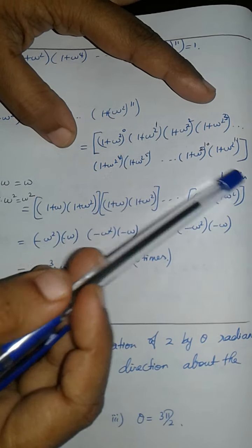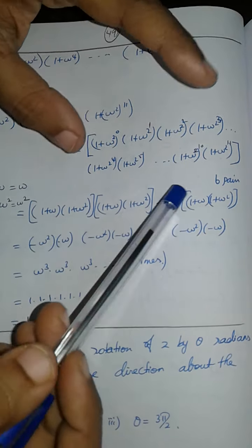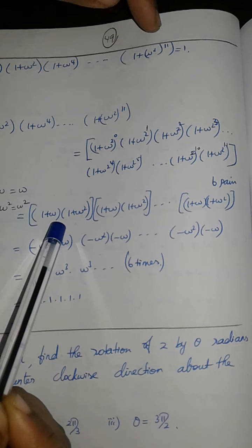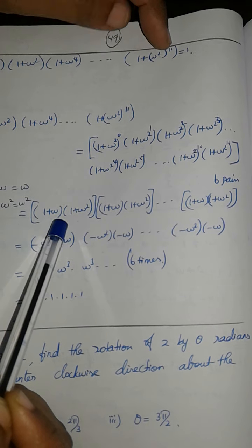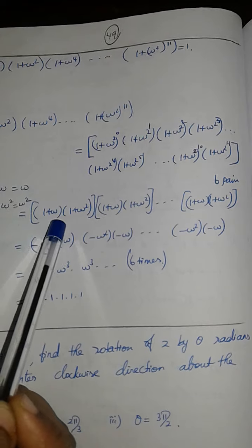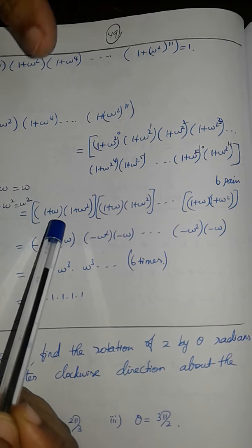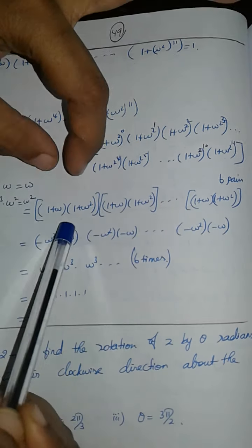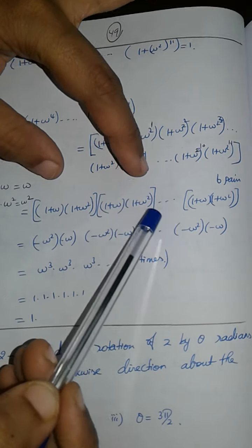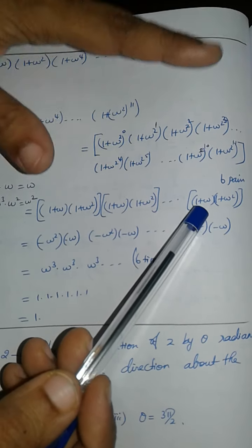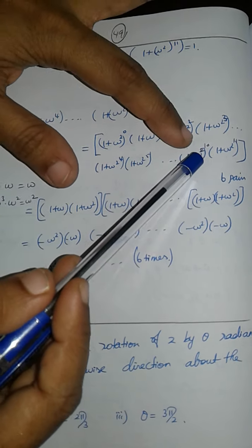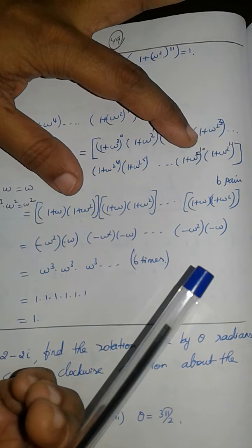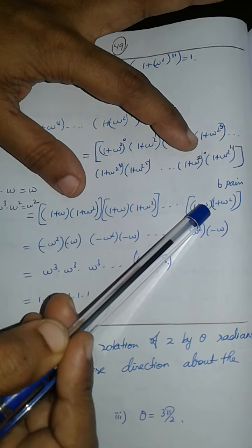To get the result, there are 12 terms in total. I have 6 pairs. If I have 2 over 11, the total terms are 12. With 6 pairs, each pair consists of 1 plus omega and 1 plus omega squared. With 2 power 10, we have 1024. With 3 tables, we have 1.